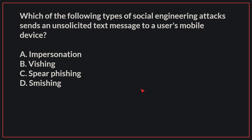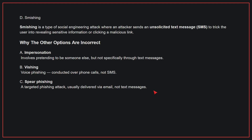Which of the following types of social engineering attacks sends an unsolicited text message to a user's mobile device? The correct answer is D, smishing. Smishing is a type of social engineering attack where an attacker sends an unsolicited text message to trick the user into revealing sensitive information or clicking a malicious link. Why the other options are incorrect: A, impersonation — this involves pretending to be someone else, but not specifically through text messages.